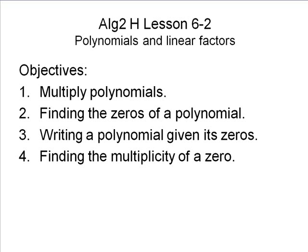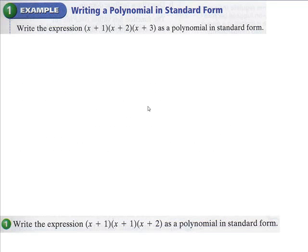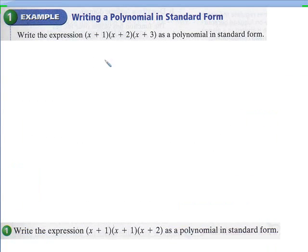1002 Honors Lesson 6.2. Here are the lesson's objectives. Our first example is asking us to write this expression as a polynomial in standard form. In standard form, the polynomial needs to be in order from highest exponent to lowest. So it looks like we're going to need to FOIL all of this.